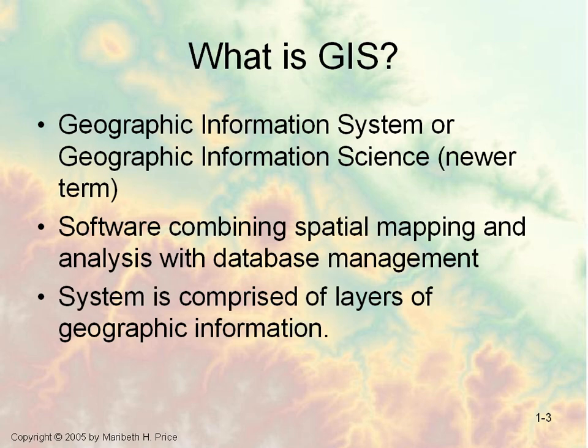So, what is GIS? The traditional definition of GIS is a geographic information system, and a newer term being used more often is geographic information science. One way to think of this is a software that combines the spatial mapping and analysis of database management systems.